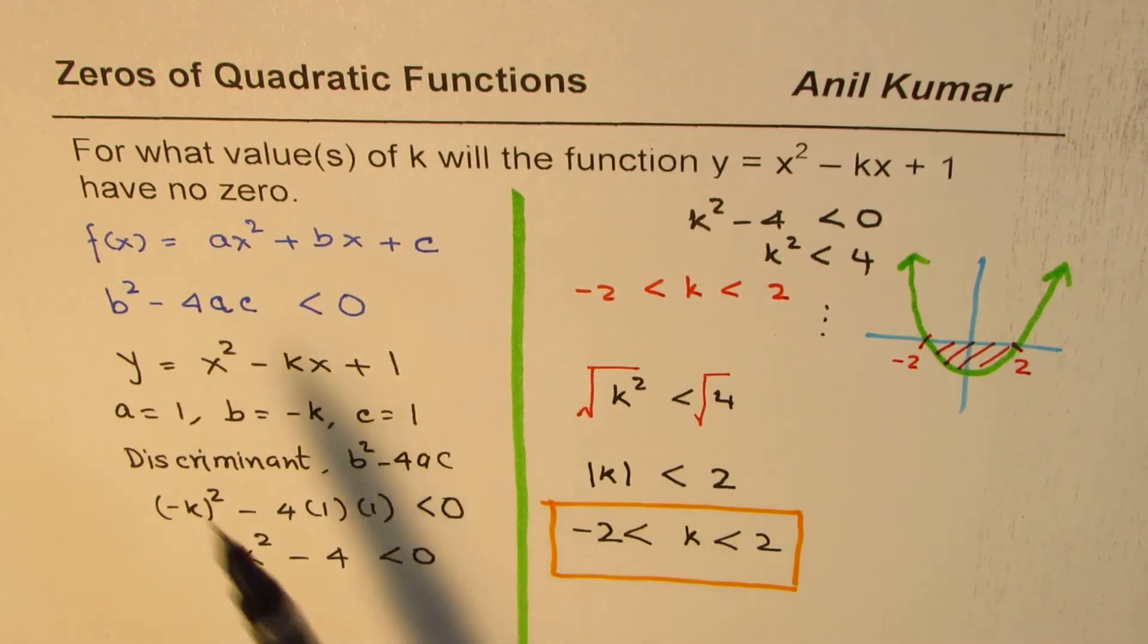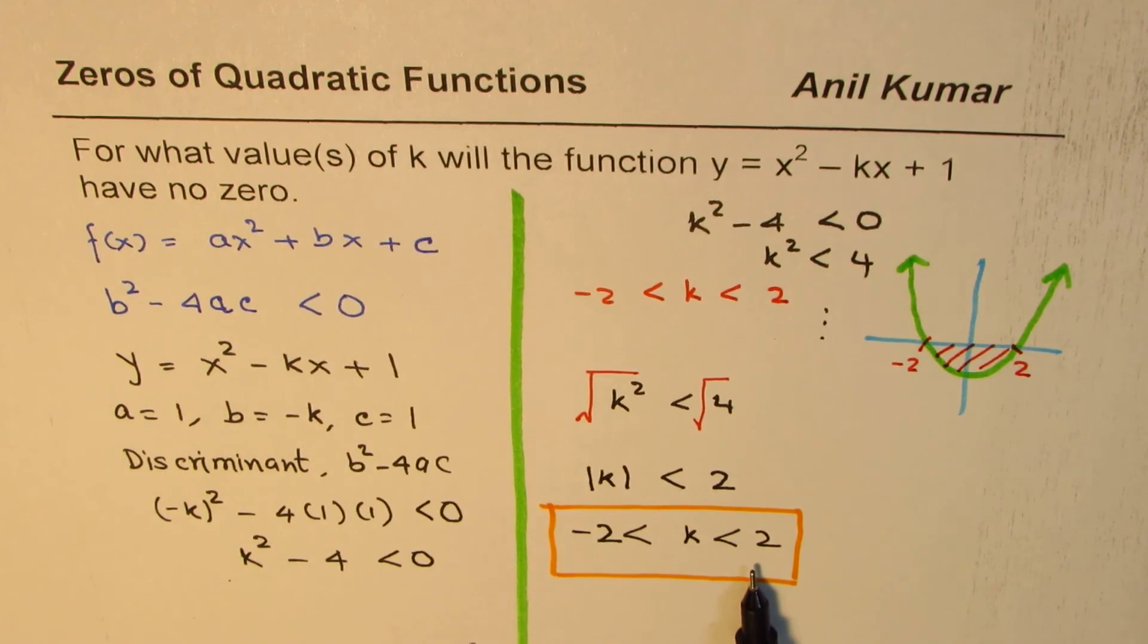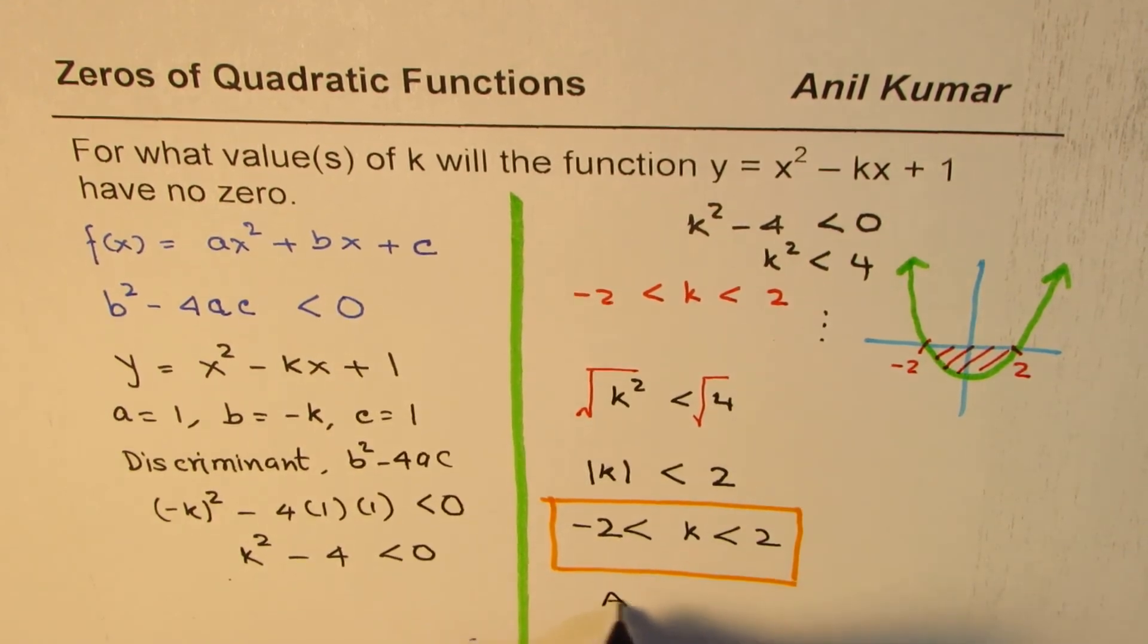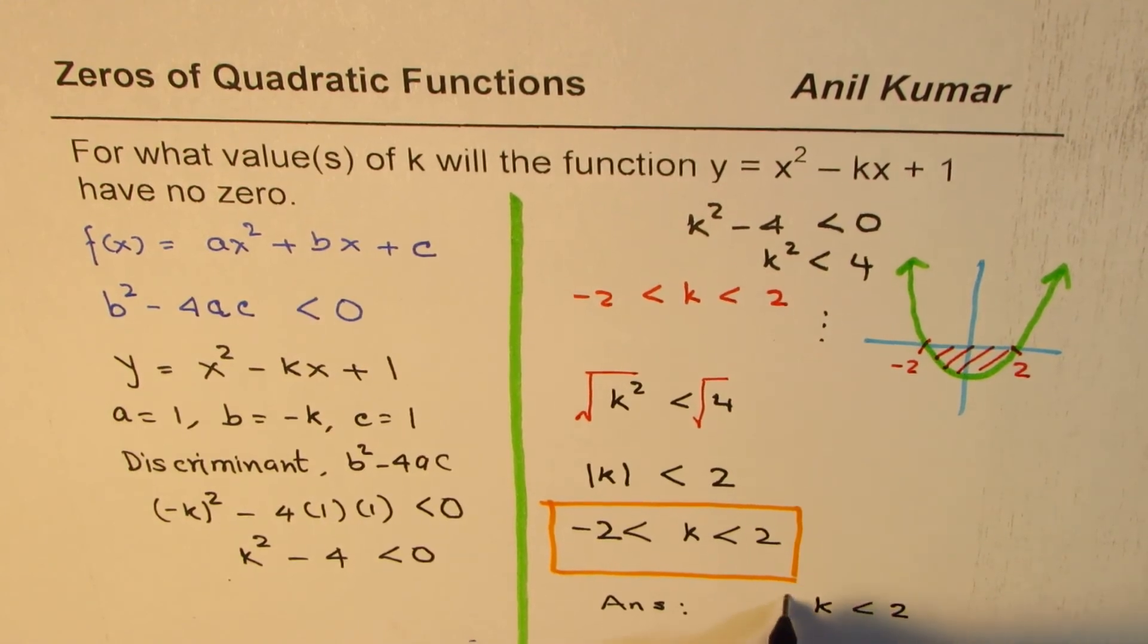So the answer for us is that the values of k are between -2 and +2. That is our answer, so the value of k is less than 2 and greater than -2.